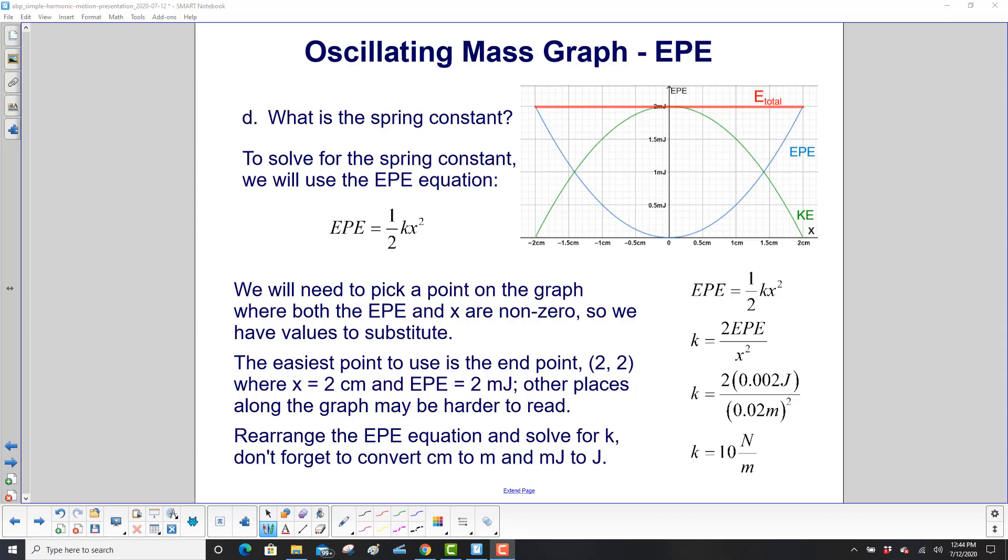What is the spring constant? To solve for the spring constant, use the EPE equation. EPE is one-half kx squared. You need to pick a point on the graph where both EPE and x are non-zero, so we have something to substitute. So the neatest point would be right here, where you have two centimeters for x and EPE is two millijoules. Any other point would work, either on the EPE or KE curve, but it's a little harder to find an exact point.